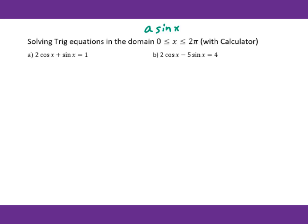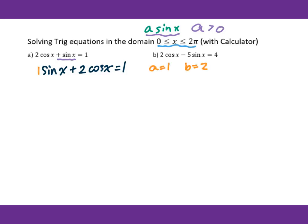Solving trig equations in the domain x between 0 to 2π, with a calculator this time. Make sure you have the a·sin(x) pattern and a is greater than zero, which means a·sin(x) is in the first position. We have sin(x) positive, so we rewrite it as sin(x) + 2cos(x) = 1. Then we get a = 1 and b = 2, so a² + b² means 1² + 2² = 5, giving √5.